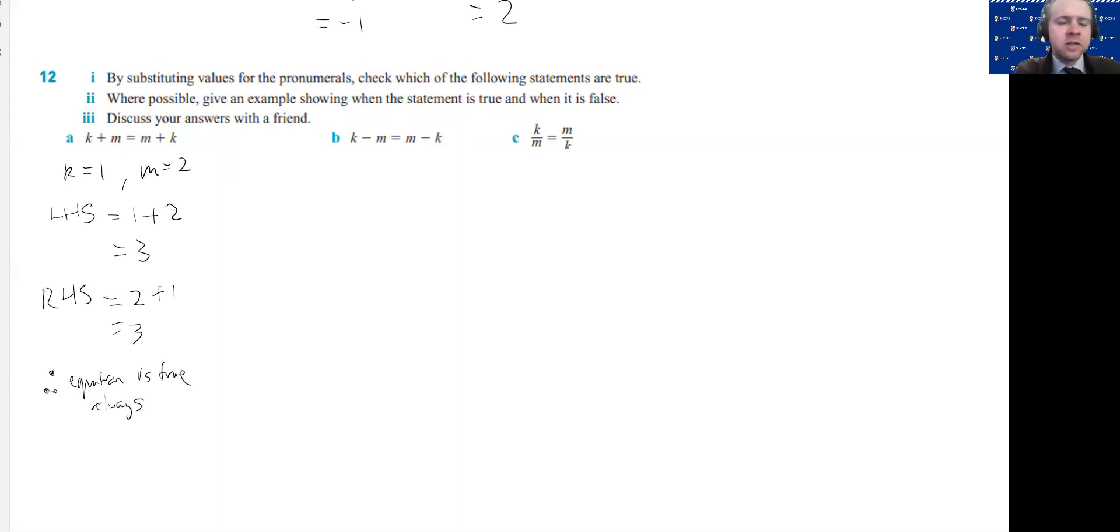I haven't proven that it's true always, but we know for a fact that that would be the case. Now for this b example, that is an interesting thing. Let's say k equals 1 and m equals 2 again. I'm just going to do it shorthand this time. So we've got 1 minus 2 for the left hand side, which equals minus 1. And then for the right hand side, we would have 2 minus 1 which equals positive 1. So in this instance, the left hand side is negative 1, the right hand side is 1. Therefore, we can say the equation is not always true.